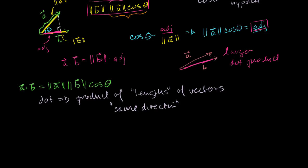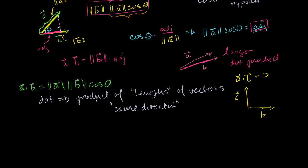When two things are orthogonal — perpendicular — a·b equals 0, and that makes complete sense from this intuition. If a is perpendicular to b, and you drop a right angle, the projection of a onto b — the shadow of a onto b — gives nothing, gives zero. No part of this vector goes in the same direction as that vector, so you get a zero adjacent side times b, giving zero.